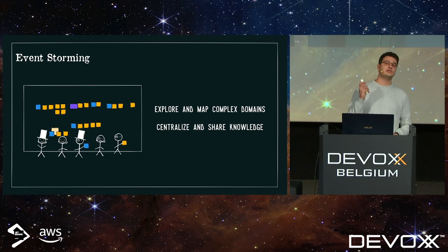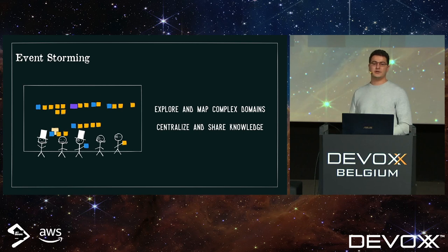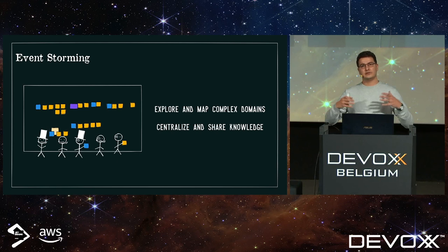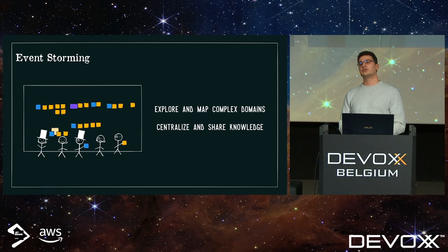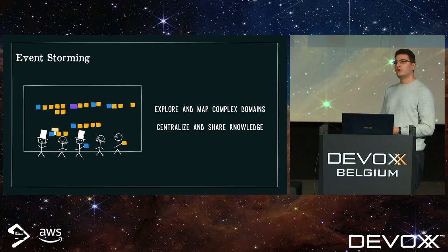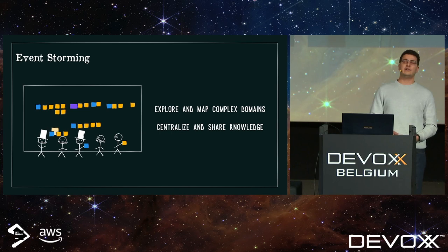A good solution for this is event storming — a workshop format created by Alberto Brandolini to explore and map complex domains. This is not part of the blue book, not a DDD tool per se, but very useful when we want to do domain driven design at scale and understand our entire system. It explores all of the system, so it's a very long workshop — it can last a few days — and ideally you do this with all stakeholders. Knowledge is fragmented amongst all stakeholders: the business and domain experts have the most, but developers may have knowledge hidden in legacy parts of the system. Everybody has some bit of information that no one else has.